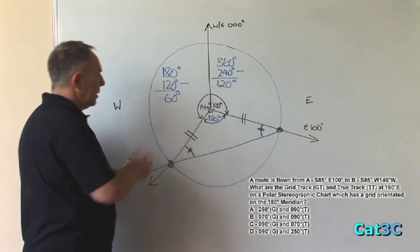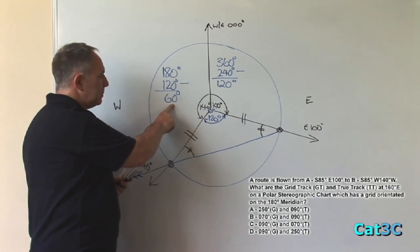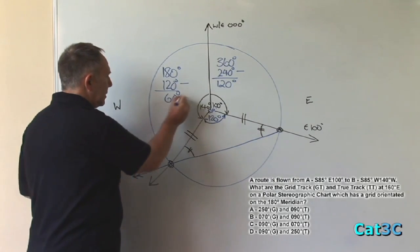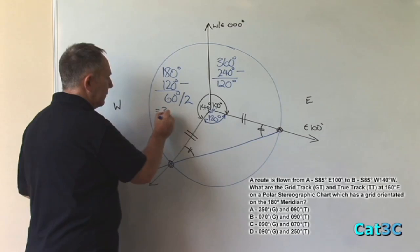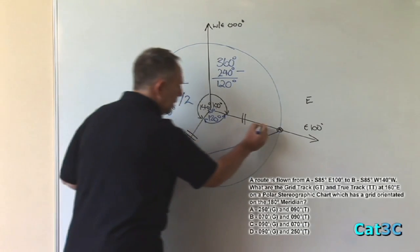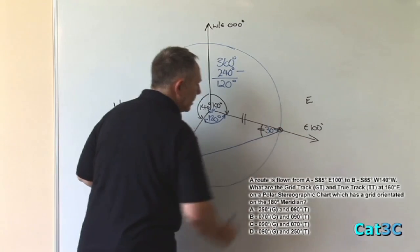Therefore, the 60 degrees here must be shared equally between those two angles. Divide that by 2 and it gives us 30 degrees. So that is 30 degrees and that is 30 degrees.